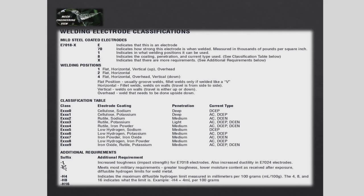If you see suffix 'M', that is a military requirement — greater toughness and low moisture content. For rare applications you would choose such an electrode. If it has H4, H8, or H16, that indicates the hydrogen level — 4 mL, 8 mL, or 16 mL of diffusible hydrogen. For example, 7018-H4 means 4 mL hydrogen level. You choose based on the application material.